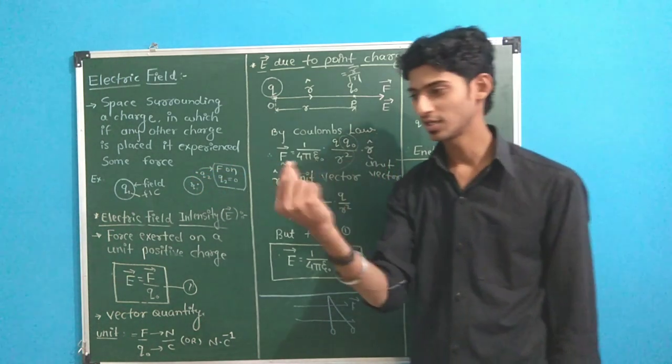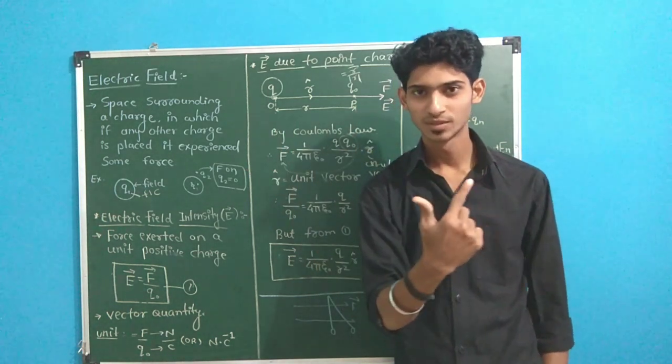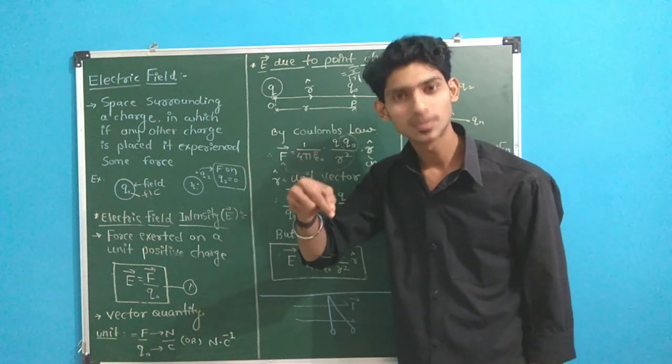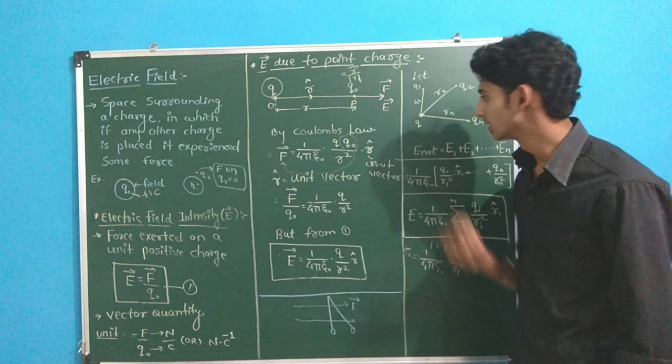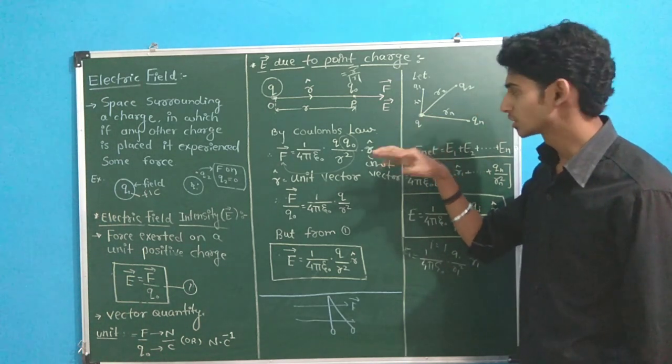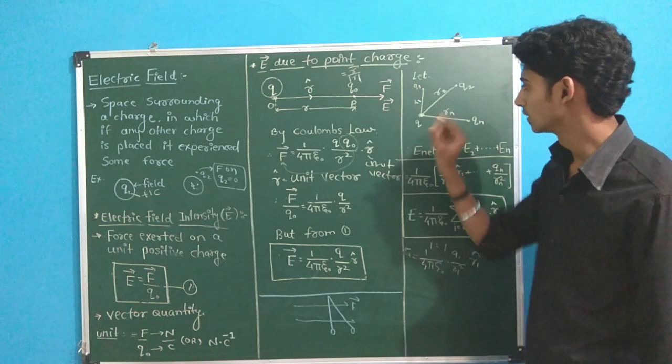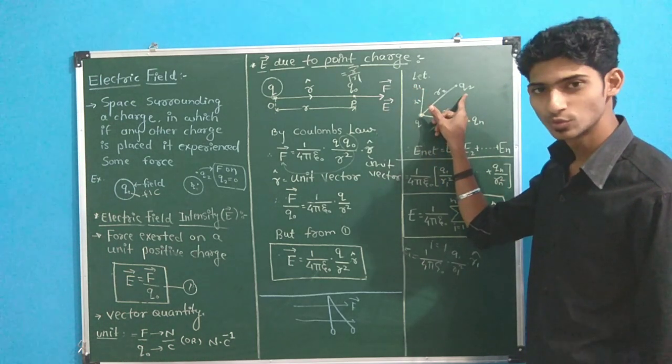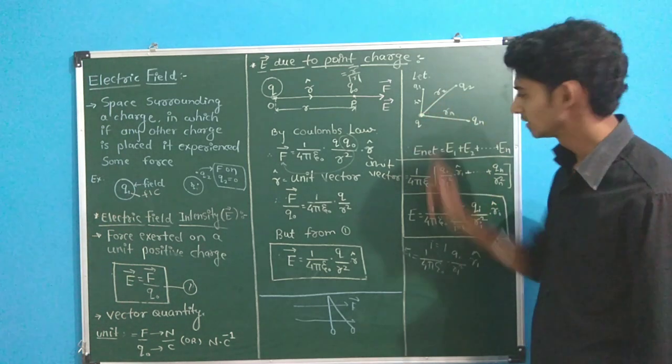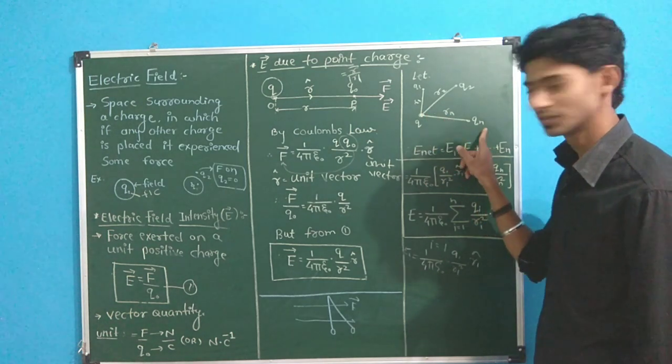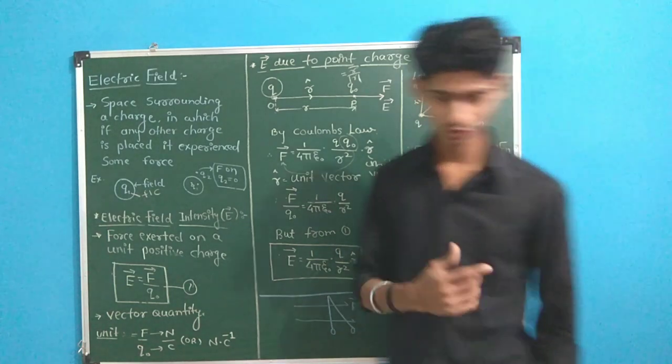We have one more thing. There will be charge Q1 at distance r1, charge Q2 at distance r2, charge Q3 at distance r3, Q4, and we have directly n charges considered at distance rn.